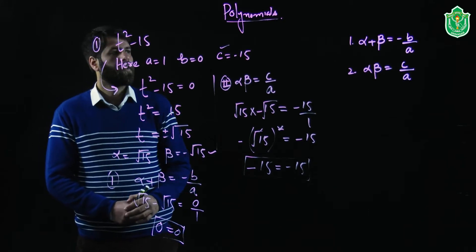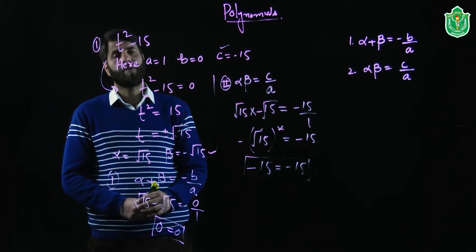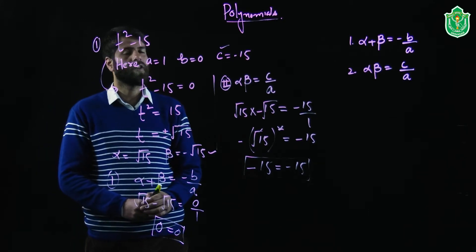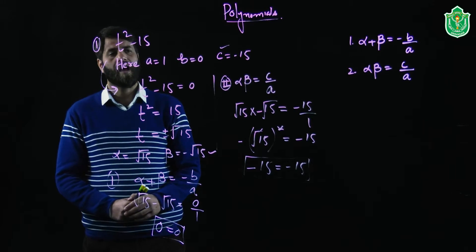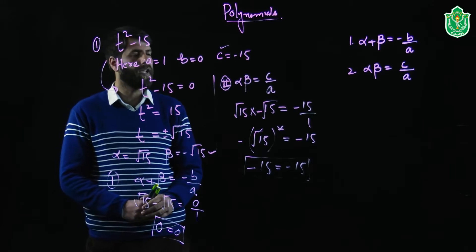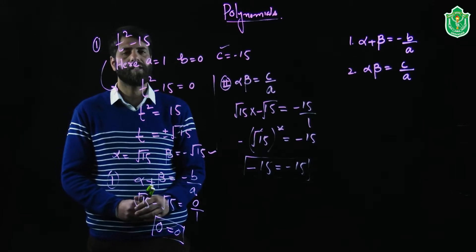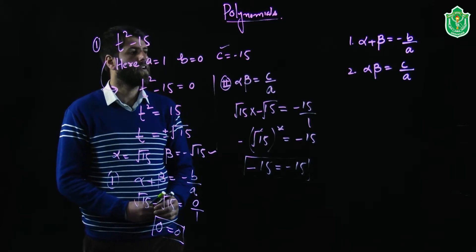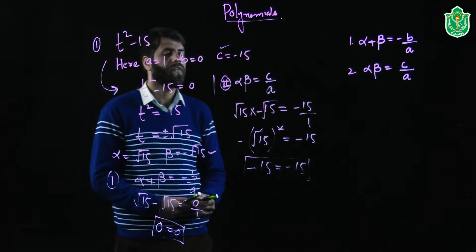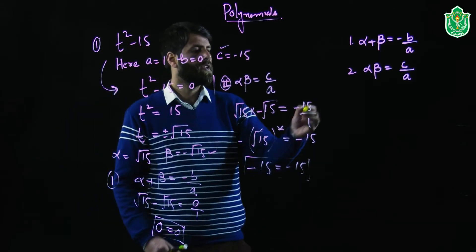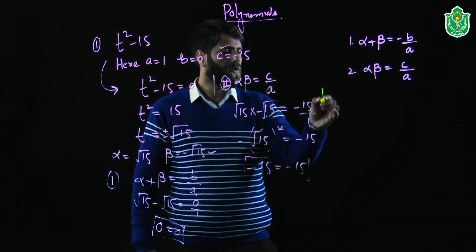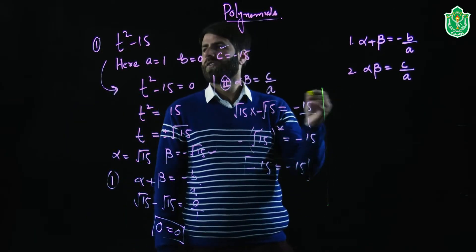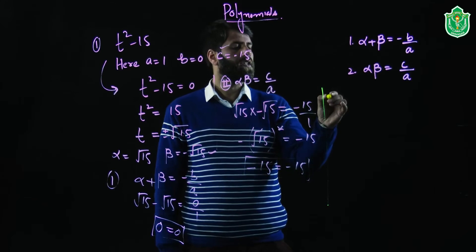So you have seen in this lecture that the relationship between zeros and coefficients: the first relationship is alpha plus beta equals minus b divided by a, and the second relationship is alpha into beta equals c divided by a. Now suppose we have another example: 8u squared plus 4u. We have to find the relationship between zeros and coefficients.